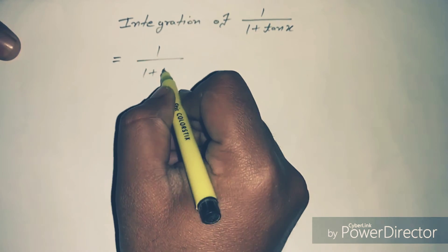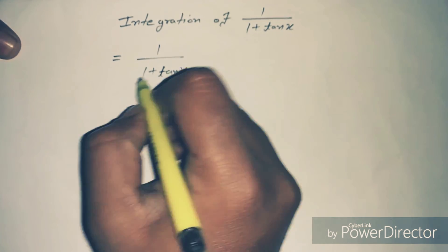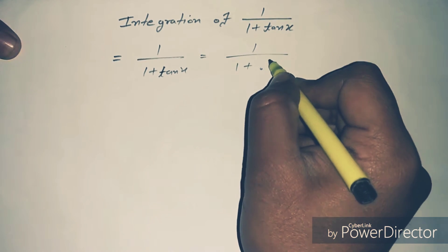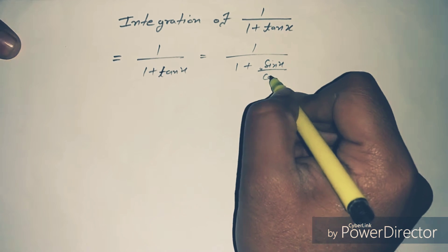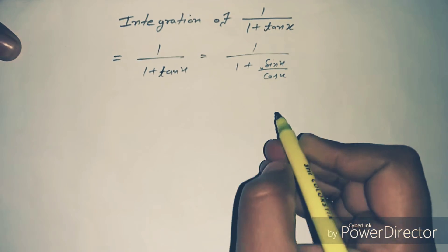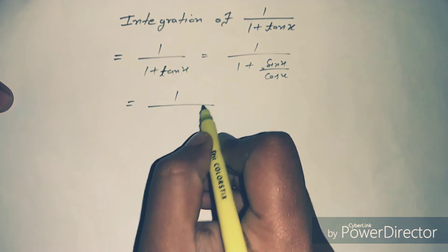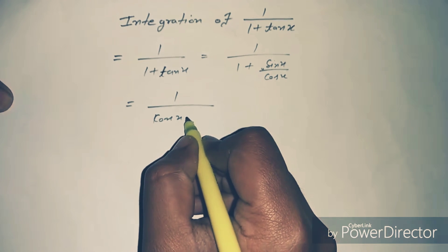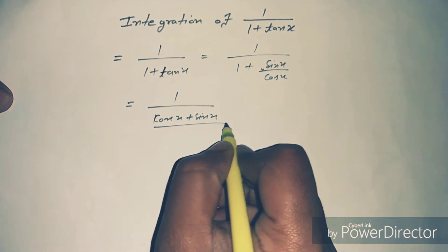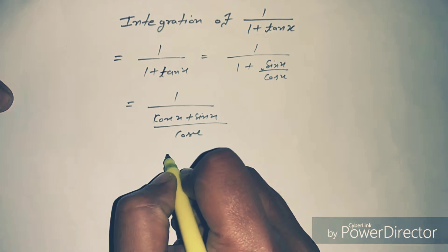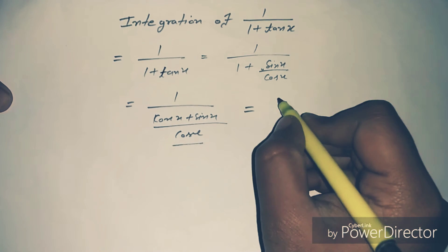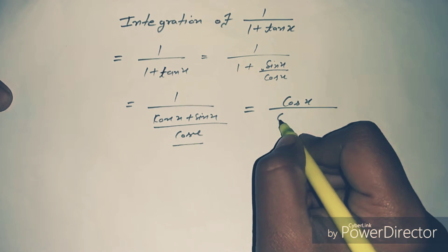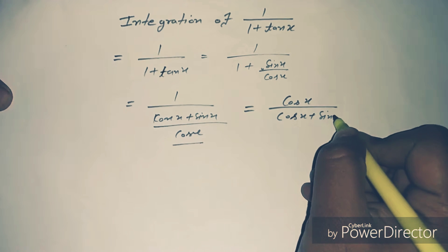We have 1 by 1 plus tangent x. Using the formula for tangent x, that is sin x by cos x, we get 1 by 1 plus sin x by cos x. Then cos x comes into the denominator, giving us cos x by cos x plus sin x.